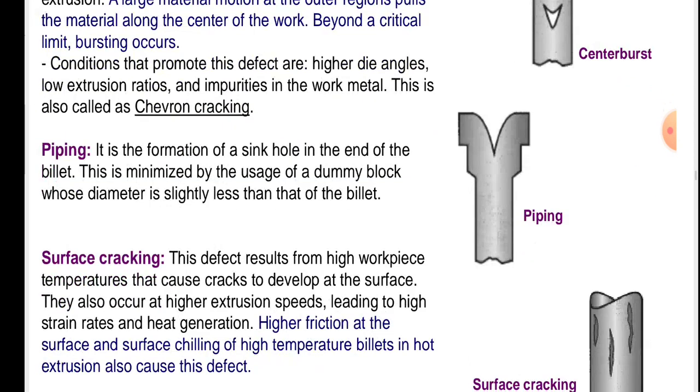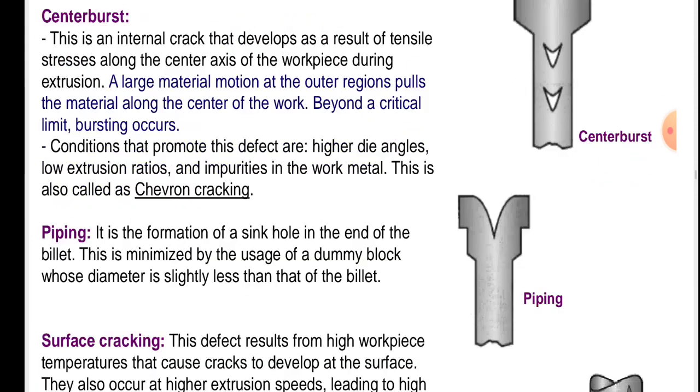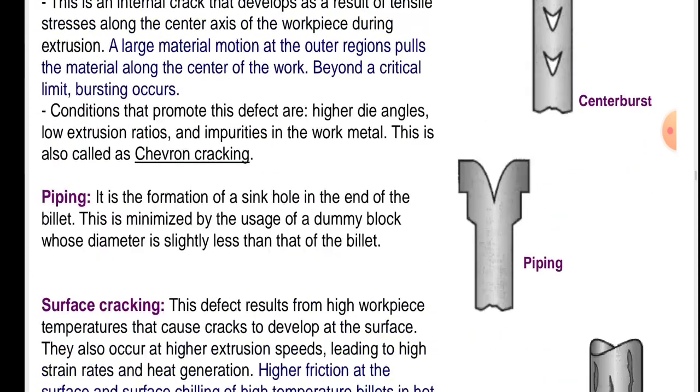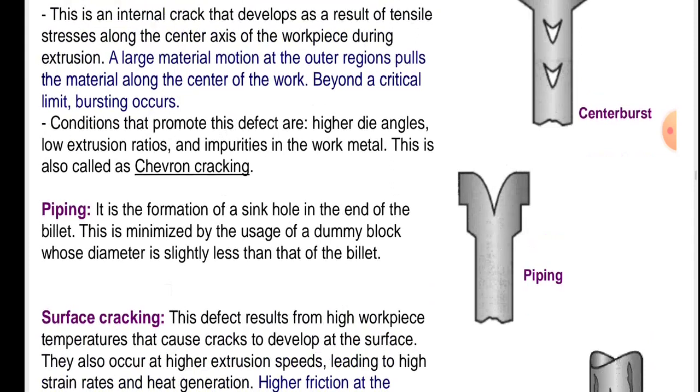Piping is the formation of a sink hole in the end of the billet. This is minimized by the use of a dummy block whose diameter is slightly less than that of the billet. These are examples of center burst and piping shown in the figure.